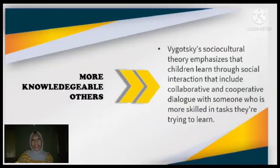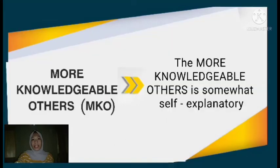I am Hanya Eskinda Masar and my assigned topic is about More Knowledgeable Others. Vygotsky's sociocultural theory emphasizes that children learn through social interaction, including collaborative and cooperative dialogue with someone who is more skilled in tasks they are trying to learn — meaning that through interacting, children will learn and gain knowledge from their interlocutor. The More Knowledgeable Other, or MKO, is somewhat self-explanatory, meaning it is easy to understand without needing extra information. In other words, MKO refers to a person who has knowledge or skills we don't have.